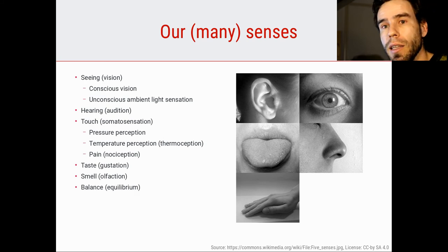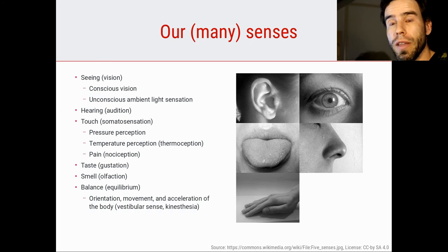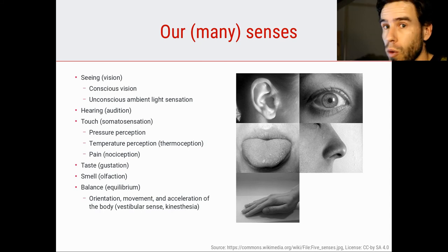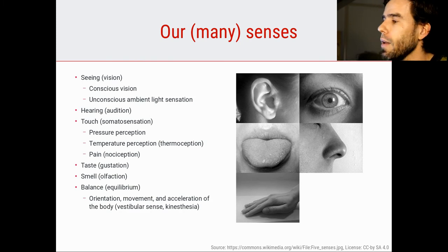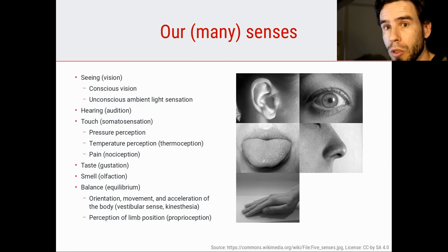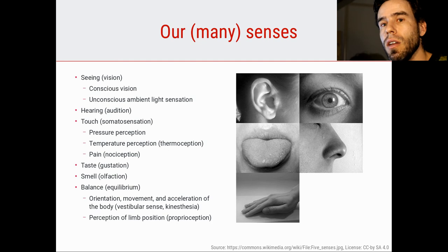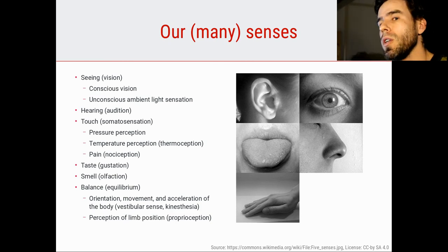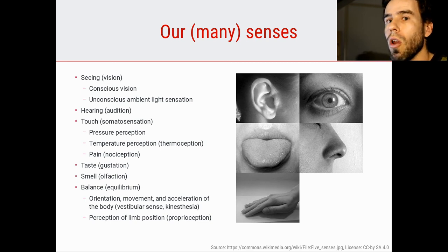Then we have taste, smell, and balance. Let's subdivide balance: we have a sensation of orientation — right now I know that up is there and down is there. We can feel movement and acceleration of the body — for example, when you're in an airplane and have that nasty sensation in your tummy of the airplane seeming to fall, that is your sense of acceleration. We also have proprioception — a perception of limb position. I can feel the difference between holding my head upright versus tilted. This is one way to categorize the many senses we have. The main point is that sensation is a very fuzzy and messy affair, and our body uses a lot of different clever tricks to sense and perceive the world around us.